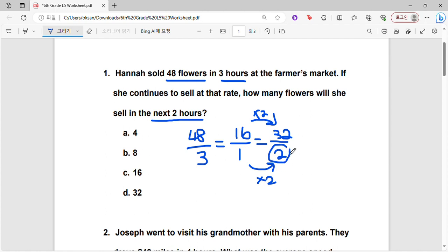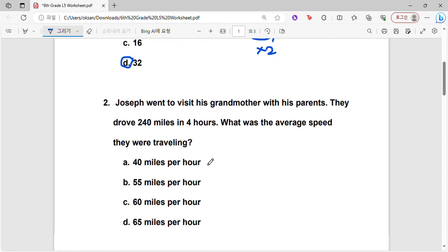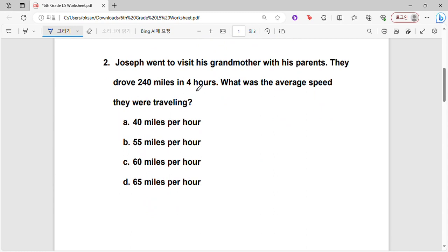Okay, next one. Joseph went to visit his grandmother with his parents. They drove 240 miles in four hours. What was the average speed they were traveling? So we know that they were traveling 240 miles in four hours.